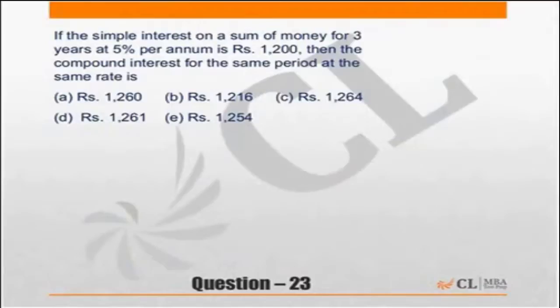Next question: simple interest on a sum of money for 3 years at 5% per annum is Rs. 1,200. What will be the compound interest for the same period at the same rate?